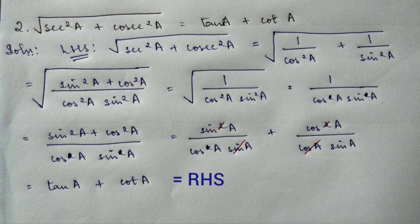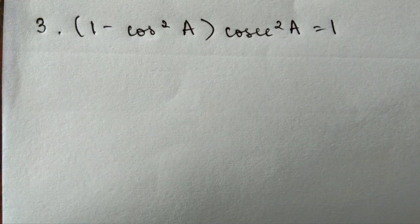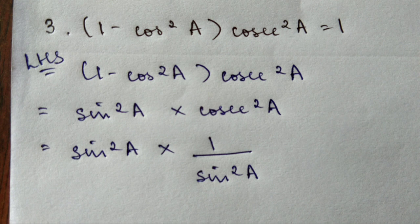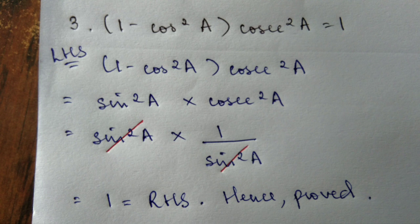Moving on to question number three — it's quite simple. Direct substitution: 1 minus cos square A equals sine square A. Then cosec square A is the reciprocal. Cancel numerator and denominator — you have 1 remaining, which is equal to the right-hand side, hence proved.